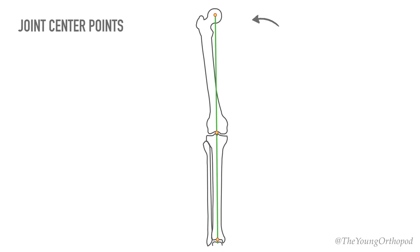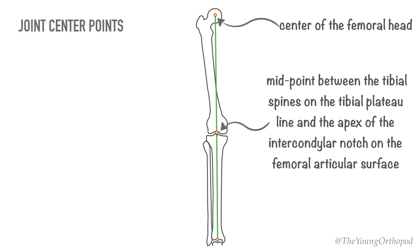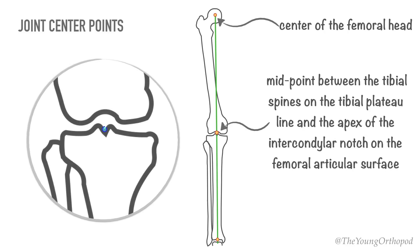The hip joint center is located at the center of the femoral head. The knee joint center corresponds to the midpoint between the tibial spines on the tibial plateau line and the apex of the intercondylar notch on the femoral articular surface. The ankle joint center is the center of the tibial plafond.